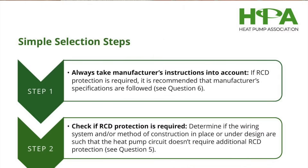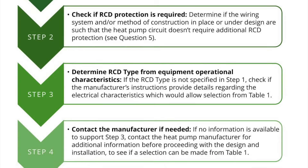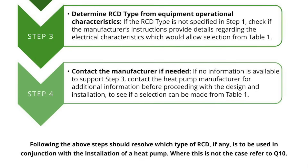Step 1: always check the manufacturer's instructions. If an RCD is required, the manufacturer will typically specify the type of RCD to use. Step 2: determine if RCD protection is necessary — not every heat pump circuit requires additional protection, particularly if the wiring system is designed with mechanical protection. Step 3: if no information is available from the manufacturer, refer to the heat pump's operational characteristics; these details will help you select the correct RCD type. Step 4: if you're still unsure, reach out to the manufacturer directly for more guidance on selecting the right RCD.